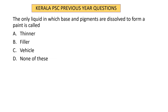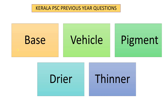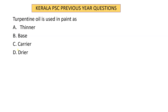Question 1: The only liquid in which base and pigments are dissolved is called — the answer is vehicle. Question 2: Turpentine oil is used in paint as — the answer is thinner. Turpentine oil reduces the thickness of paint, so it acts as a thinner. Question 3: Which one of the following is NOT a vehicle in paint? Options: turpentine oil, nut oil, tung oil, poppy oil. The answer is turpentine oil — it is a thinner, not a vehicle.